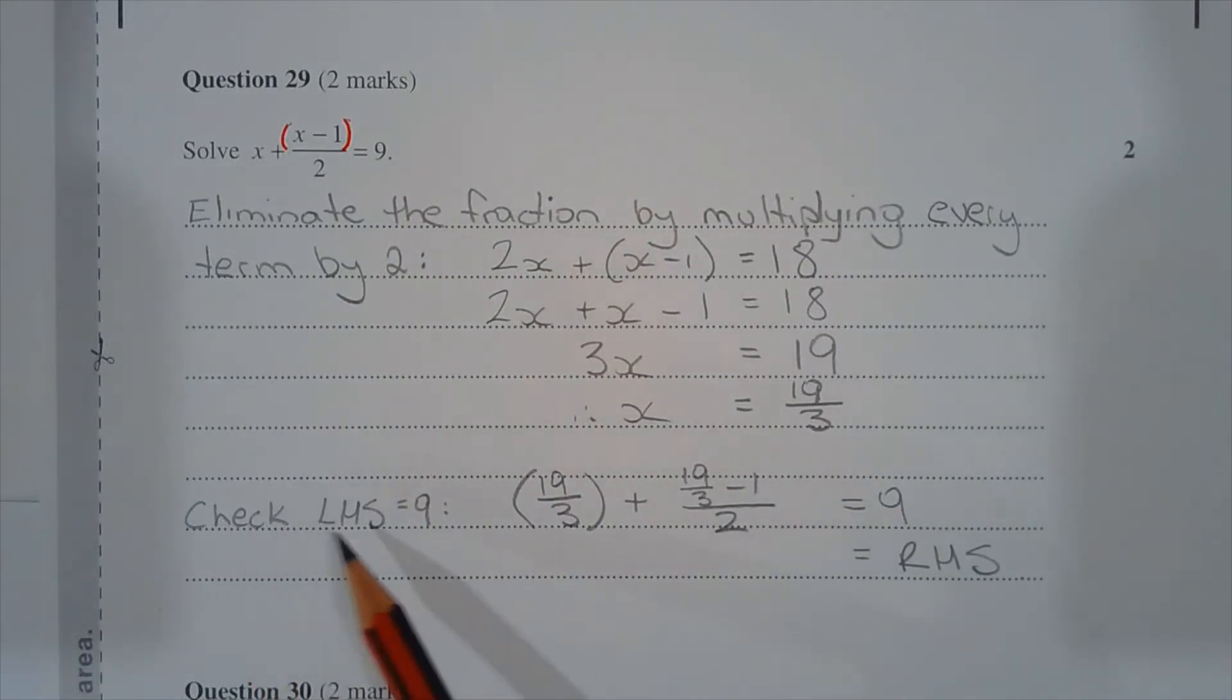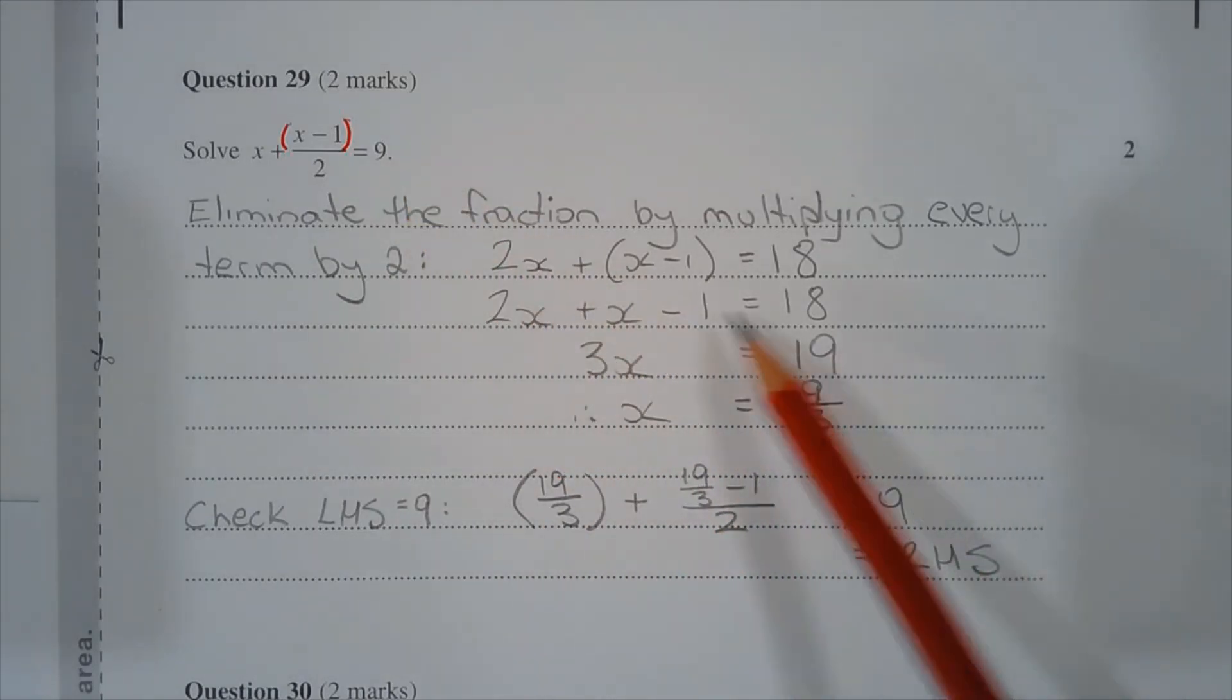So checking the left-hand side equals 9. 19 over 3 plus 19 over 3 minus 1 all over 2. Evaluating that expression does equal 9, which equals the right-hand side. So we are confident that this is in fact the correct answer.